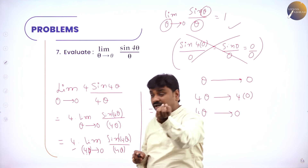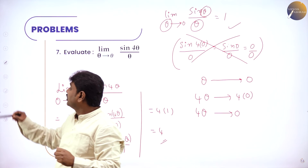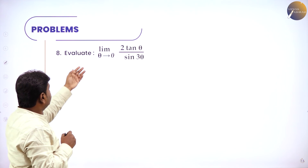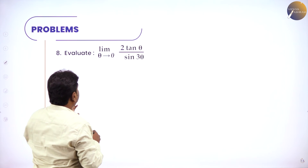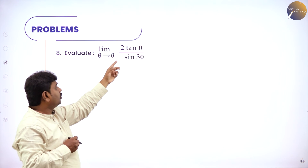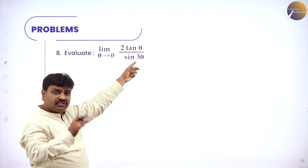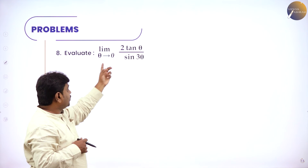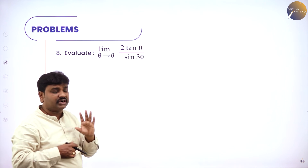These are the basics you have already learned and which you should know thoroughly to continue with more problems. Next, limit theta tends to 0 of 2 tan theta by 3 sine theta. Putting theta as 0 gives tan 0 by 3 sine 0, which is 0 by 0 — indeterminate. So simplify: 2 is a constant, take it outside. Then apply limit theta tends to 0 of tan theta divided by sine 3 theta.